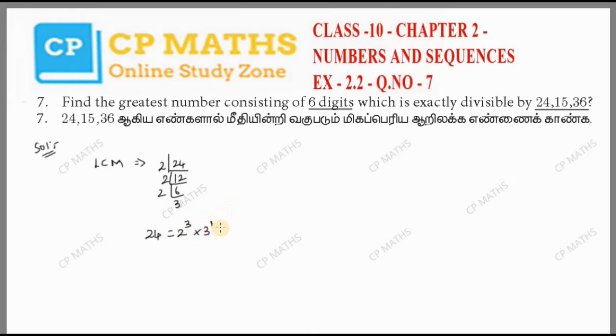For the LCM, we use the highest power values. Now let's do 15. 15 equals 3 times 5, so that's 3 to the power 1 times 5 to the power 1.